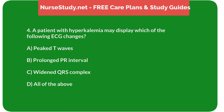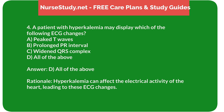Question 4: A patient with hyperkalemia may display which of the following ECG changes? A. Peaked T waves. B. Prolonged PR interval. C. Widened QRS complex. D. All of the above. Answer: D. All of the above. Rationale: Hyperkalemia can affect the electrical activity of the heart, leading to these ECG changes.